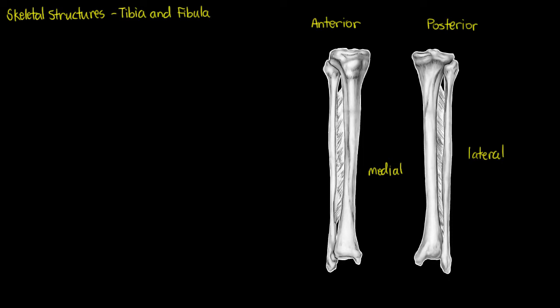Before we get started naming the structures of the tibia and fibula, we need to know the actual bones themselves. The bone highlighted here in pink is our tibia, the larger of the two bones in our lower leg, and the one that's going to articulate with our femur to form our knee joint.